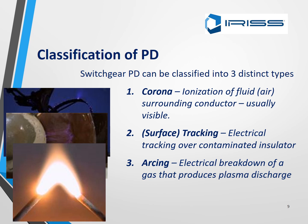Surface tracking is the electrical tracking over contaminated insulators. With surface tracking you can actually physically see it, you can hear it through ultrasound, and you will also be able to pick up small heat signatures via infrared. Arcing has a distinctive sound and can definitely be picked up by PD, by ultrasound, and by infrared.